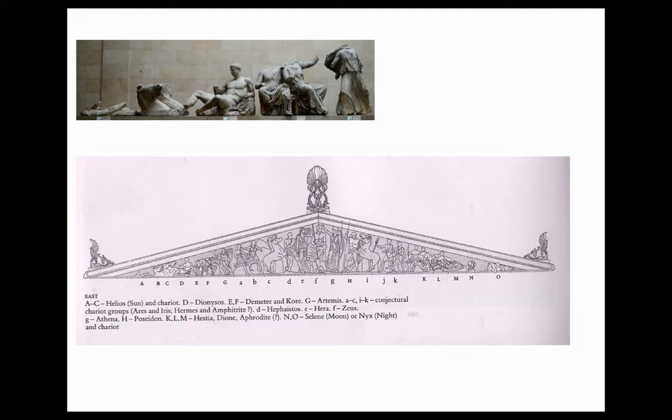In the pediment there is sculpture — here's a famous story. Greece was part of the Ottoman Empire and an English nobleman, an amateur archaeologist named Lord Elgin, went to the local governor and said, can I put scaffolding up on the Parthenon so my people can make drawings of the sculpture? The governor said sure. He put up scaffolding, ripped off the sculpture, and took it to England. The Greeks are still in court to this day trying to get it back. They're called the Elgin Marbles — the sculpture from the Parthenon pediment — now in the British Museum.